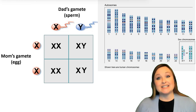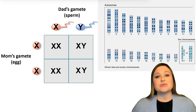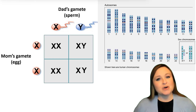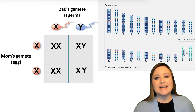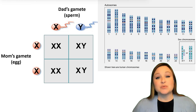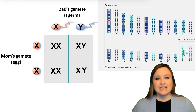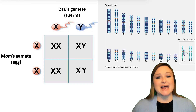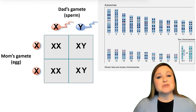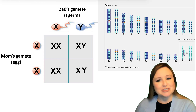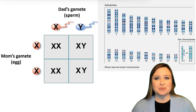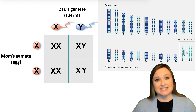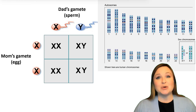I remember in history learning about the English king Henry VIII, who went through several wives trying to secure a male heir. We know now that his wives weren't the problem, because females can only pass along X chromosomes. If Henry VIII was having trouble siring a male, it's because he was passing along his X chromosome in the sperm that fertilized the eggs. So it's the male that actually decides whether the child will be male or female.